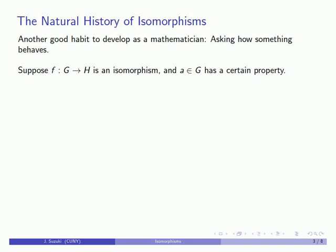In this particular case, one way we can pursue this is the following. Suppose I begin with an isomorphism F going from group G to group H, and suppose I know that element A in G has a certain property. I don't know what that property is, but it's some group property we can identify. The question at hand is: what can we say about F of A?